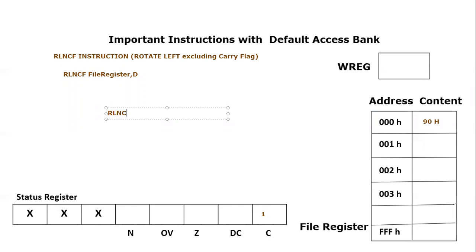We take RLNCF, which means rotation left not through carry flag. The file register we are going to rotate is 0x00, and its content is 0x90. We are going to rotate it left, and the destination is 0, which means the result will be stored in the working register.